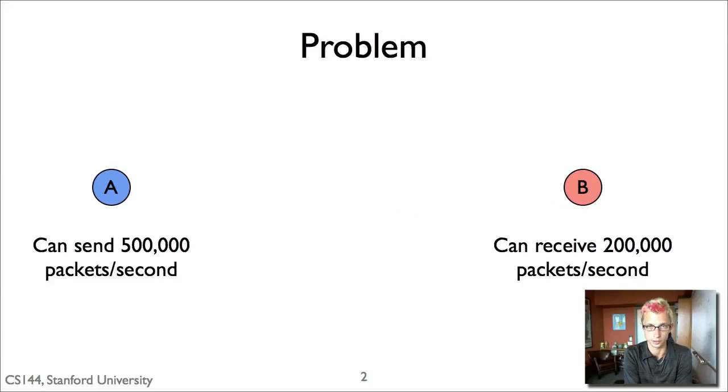The basic problem flow control tries to solve is when a sender can send data faster than the receiver can process it. So here we have a case where the sender A can send some 500,000 packets per second, but the receiver B can only receive 200,000 packets per second. This might be because B has a slower processor, its networking card isn't as good, or for whatever reason.